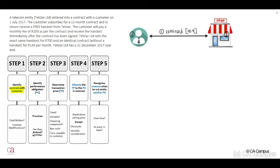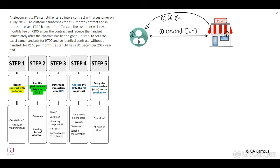The second step, we need to identify the performance obligation. What is a performance obligation? This will be a promise by our entity to deliver distinct goods or services, or a series of distinct goods or services, to our customer. Step three, we need to determine the transaction price — this is the consideration that our entity will receive from our customer.